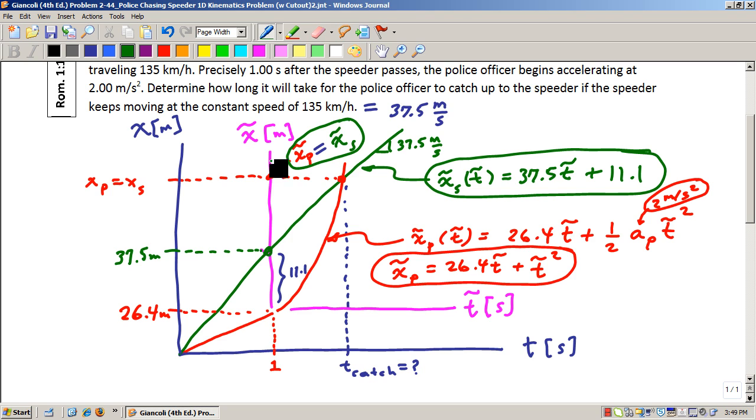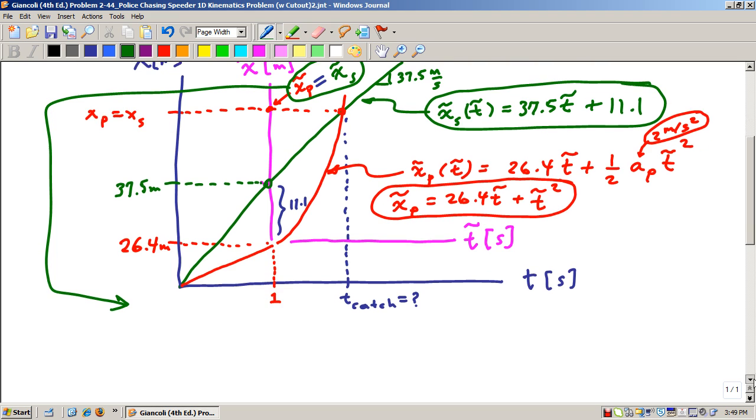And so, I'm going to equate the two equations. So the police officer's position is 26.4 T-tilde plus T-tilde squared equal to the speeder's position is 37.5 T-tilde plus 11.1. And now we're going to solve for the unknown variable T-tilde.